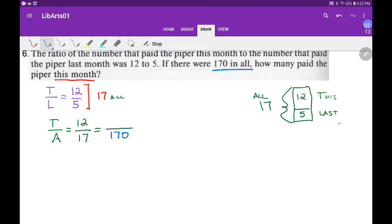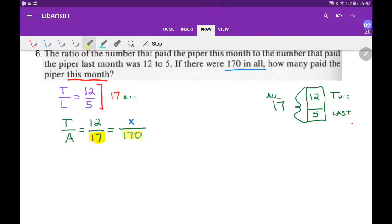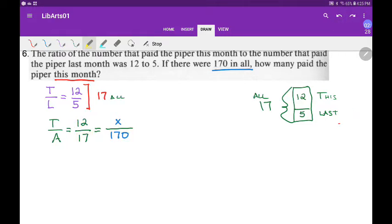And then we're curious about how many paid the piper this month. So we're acknowledging we know it's not really 17. It's really 170. So if it's not really 12, what is it really? Okay, so we're going to find out. And I think some of you probably already know just looking at this.